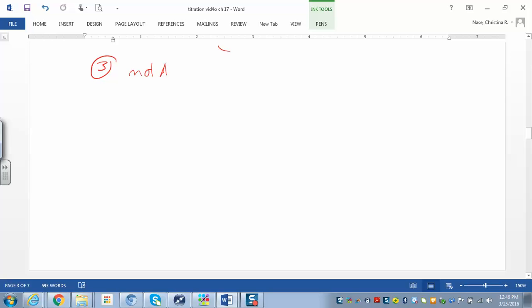Our moles of acid haven't changed, because we're looking at the initial moles of acid. We had 20 mils of 0.5 molar. We already calculated that in step two. So, moles of acid are 0.01 moles of acid. Moles of base, that's going to change at every step, because we're changing the volume of the base. We're adding more at each step.